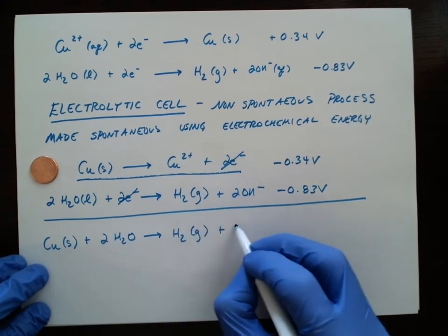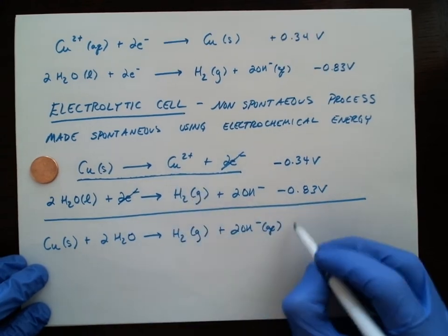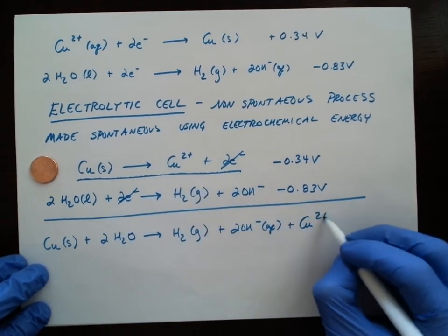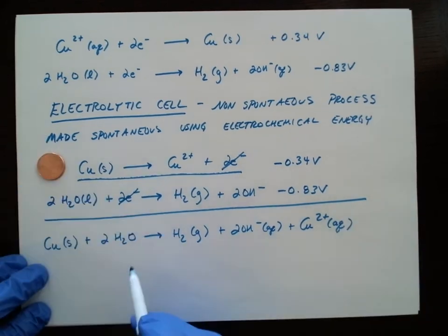And we should be able to get some hydrogen gas and hydroxide ions. And what I'm really interested in is generating this copper 2 ion that can react with atmospheric components to make some blue-green colored stuff.